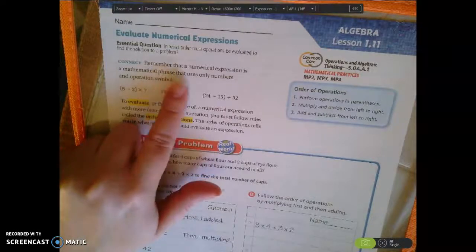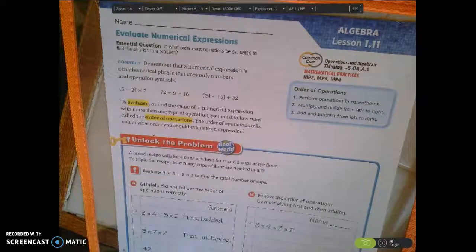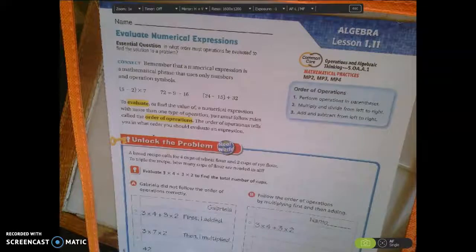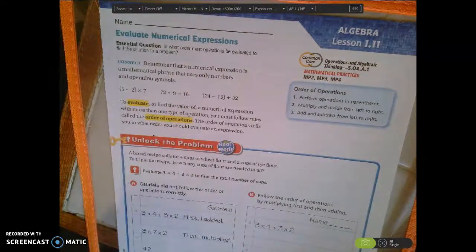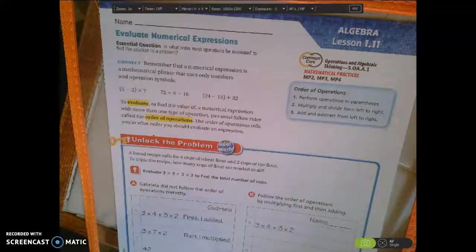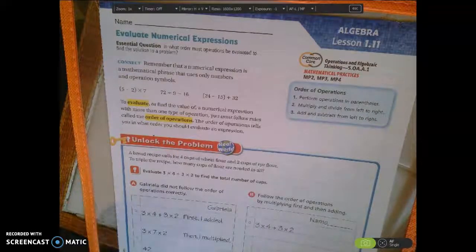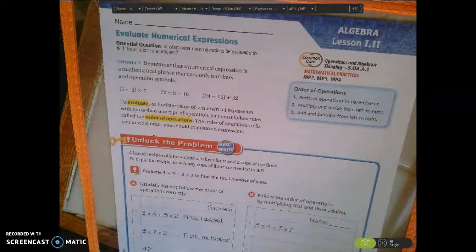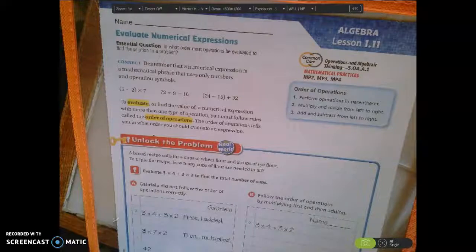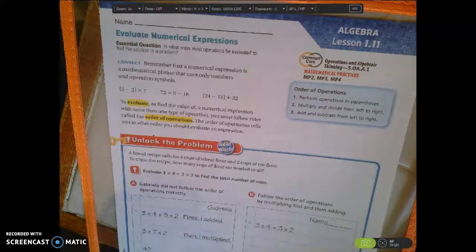Remember that a numerical expression is a mathematical phrase that uses only numbers and operation symbols. Here are examples of numerical expressions. To evaluate or find the value of a numerical expression with more than one type of operation, you must follow the rules called the order of operations. The order of operations tells you in what order you should evaluate an expression.